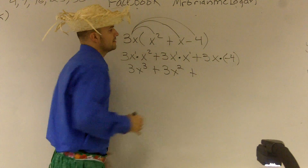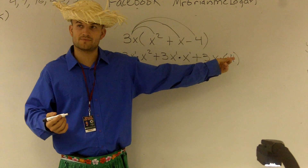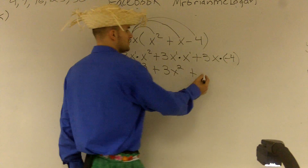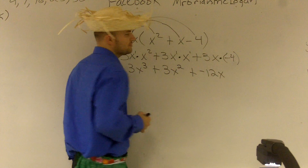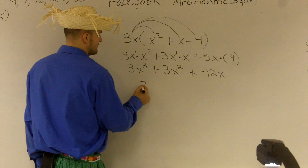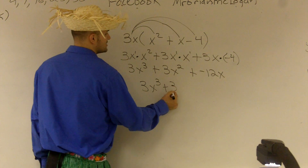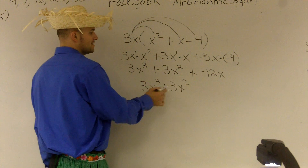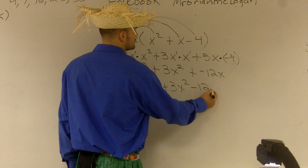And then 3 times negative 4 is going to give me negative 12, and there's an x out there as well, so it's negative 12x. Usually we don't like to write plus negative 12, so I'll finish this off as 3x cubed plus 3x squared minus 12x.